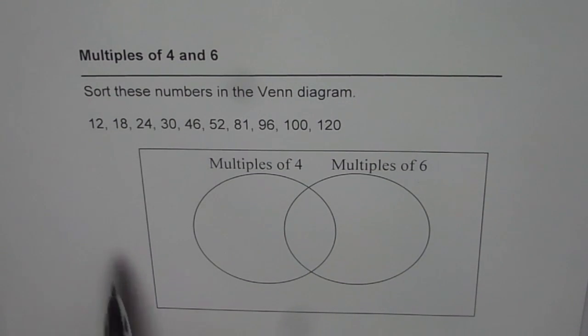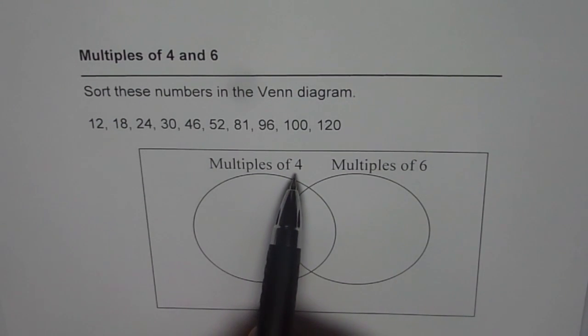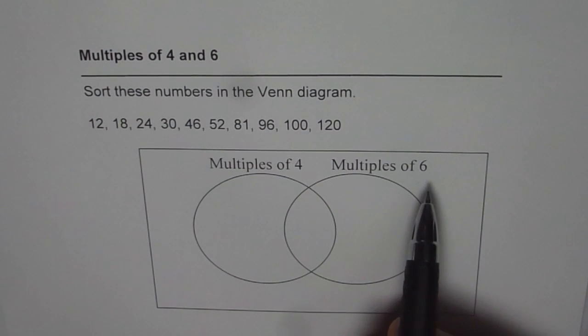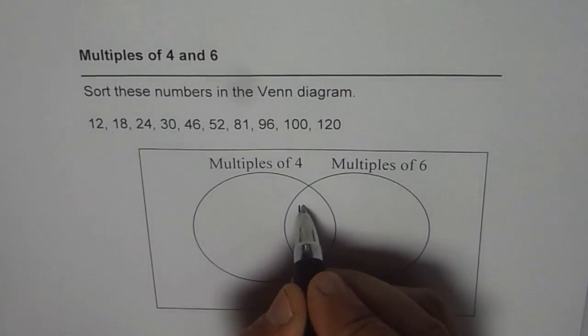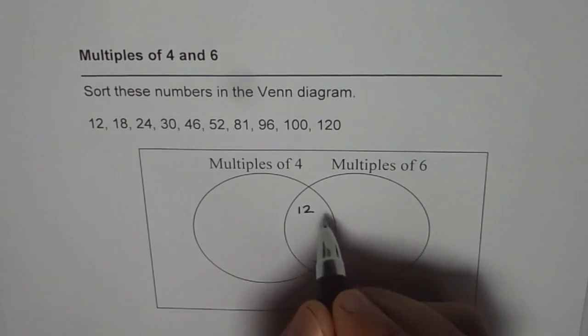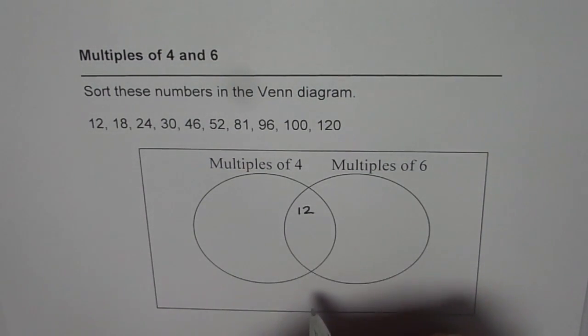Now, let's start with 12. 12 is a multiple of 4—4 times 3 is 12. Is 12 a multiple of 6? Also, yes. 6 times 2 is 12. So it is a common multiple. It will have a place right there, which is common to both 4 and 6.